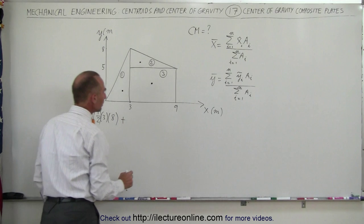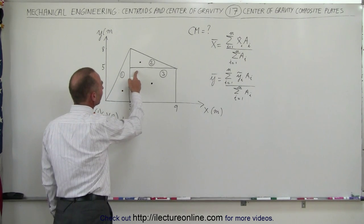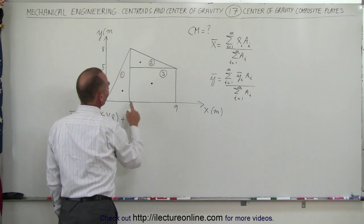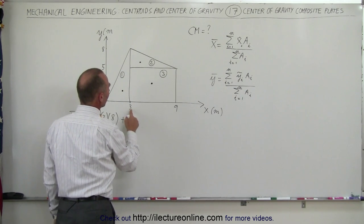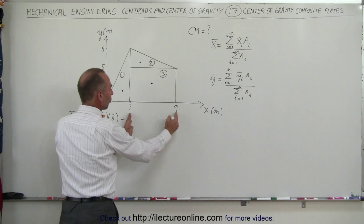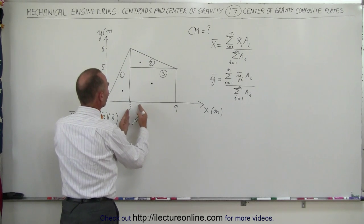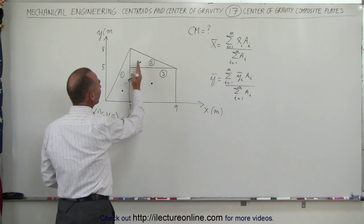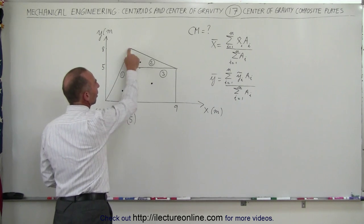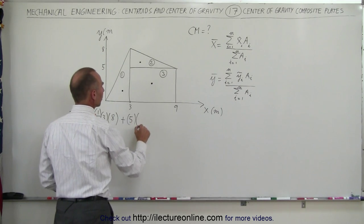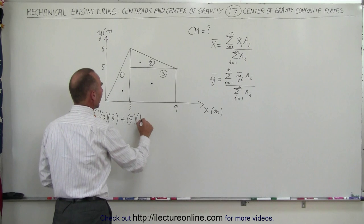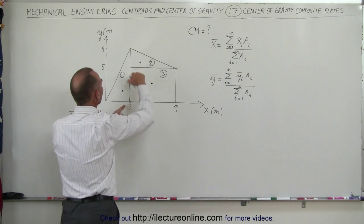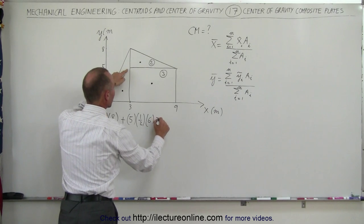For the second triangle, in the x-direction the center of mass would be one-third of the distance from the base to the height — from 3 to 9. The distance is 6, one-third of 6 is 2, add 2 to 3, that would be 5. So 5 is the x-coordinate of the center of mass of the second triangle. We multiply that times the area: one-half times base 6 times height 3.